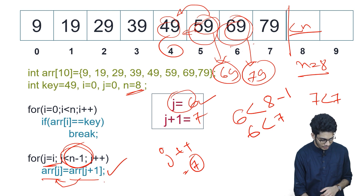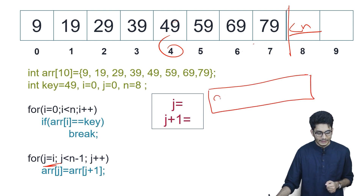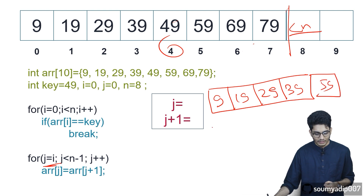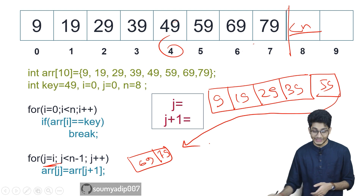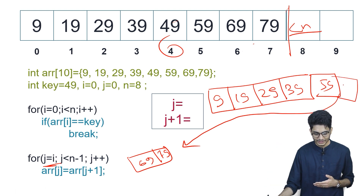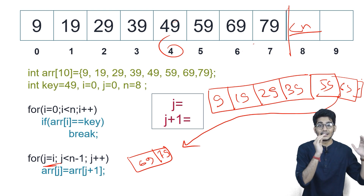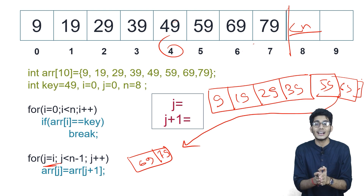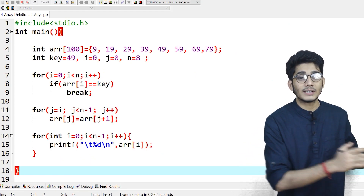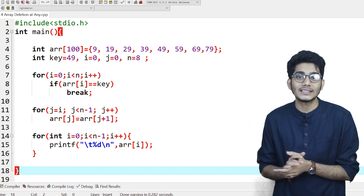The updated array will be 9, 19, 29, 39, 59, 69, and 79. At first we performed a linear search, got the index, then performed the shifting. If you have any doubt, write in the comment section. We have discussed the algorithms, the steps, and performed the dry run. Now we will compile the code and see the output.